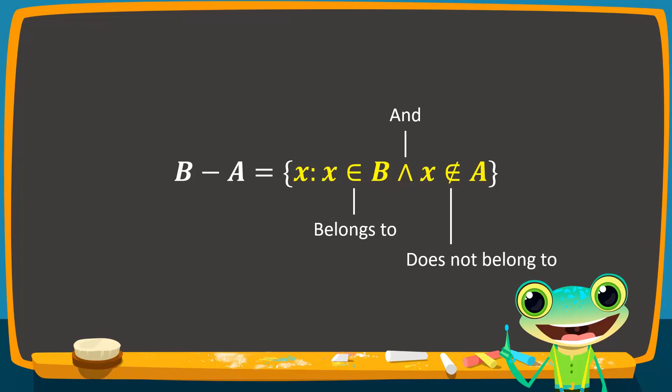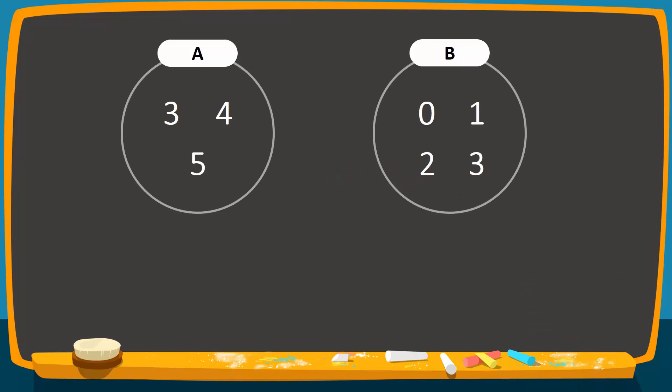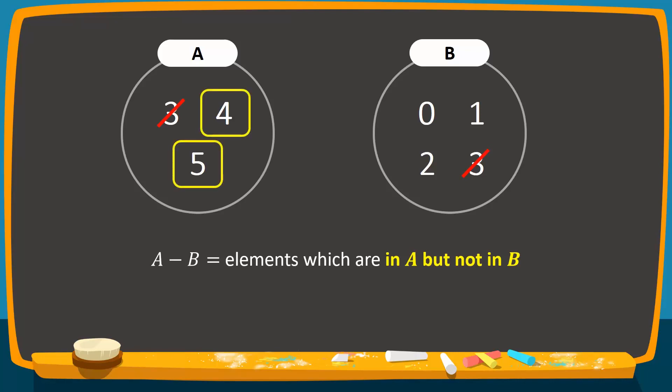Let's see what this means with a simple example. Let set A contain the elements 3, 4, and 5. A difference B will include elements which are contained in set A but not in set B. Of the elements in set A, 3 is also in set B, while 4 and 5 are not.